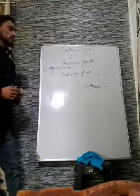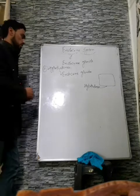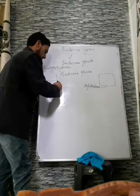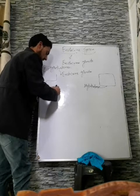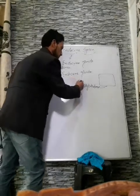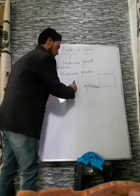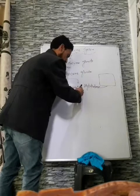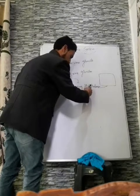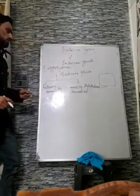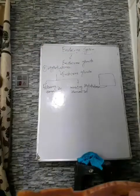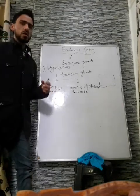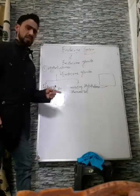The hypothalamus secretes two types of hormones. The first type are releasing hormones, abbreviated as RH. The second type are inhibiting hormones, abbreviated as IH. Both these releasing and inhibiting hormones control the secretions of the next gland, which is the pituitary gland. The releasing hormones are secreted by the hypothalamus into the blood and reach the pituitary gland, where they stimulate the secretion of various pituitary hormones.